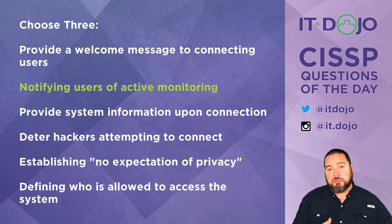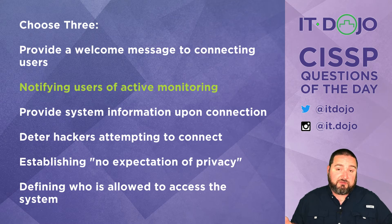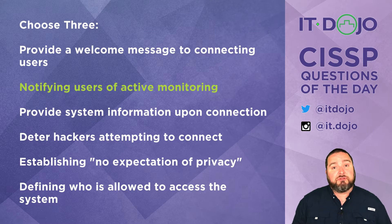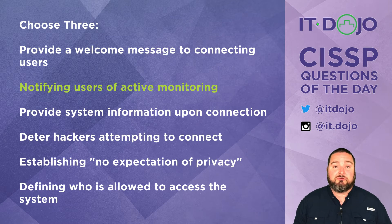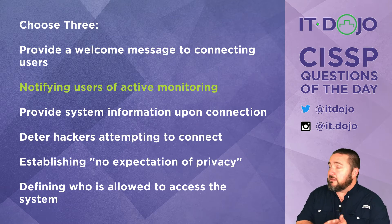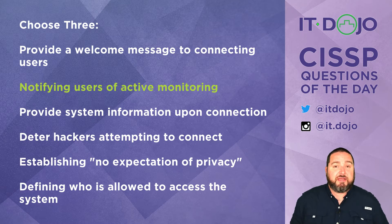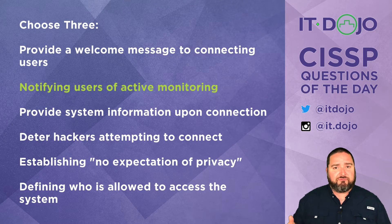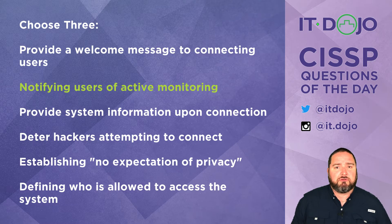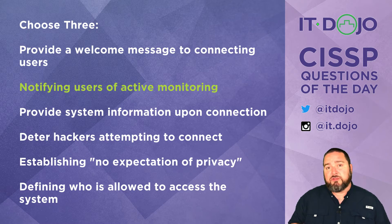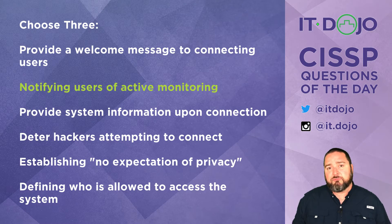If users are connecting to the system or to the network, they're going to be monitored. You want to make sure they understand that and that there are potentially consequences for things they do while connected to this network or resource. The next choice is to provide some system information for the connection — absolutely not. Providing the device's name or IP address information is not something you want to do when somebody establishes their initial connection, because if the person is a bad actor, they could gain yet more information about your system.